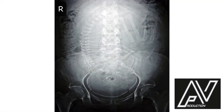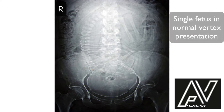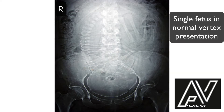This is a plain x-ray of the abdomen and pelvis, AP view, well centralized, well exposed, showing a single fetus in longitudinal lie, flexed attitude, cephalic presentation with vertex as the presenting part. There are no obvious fetal skeletal abnormalities. Therefore, my diagnosis is obstetric x-ray showing a single fetus in normal vertex presentation.